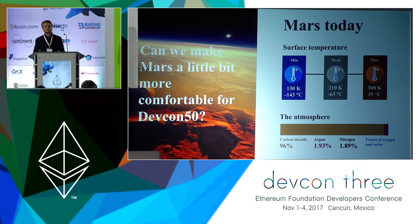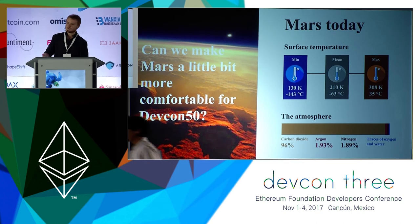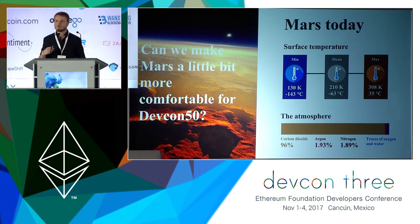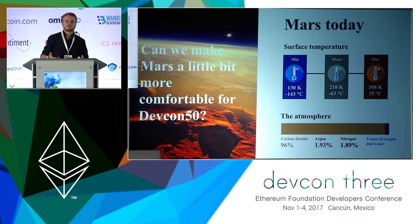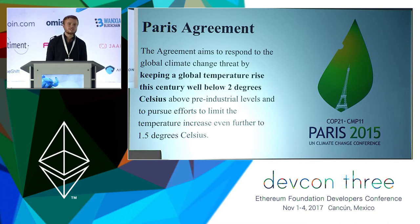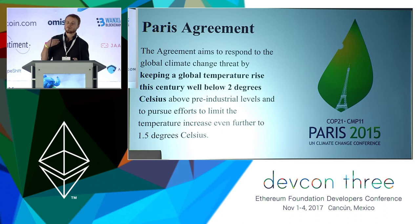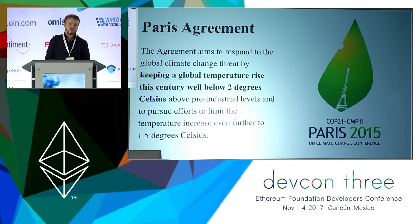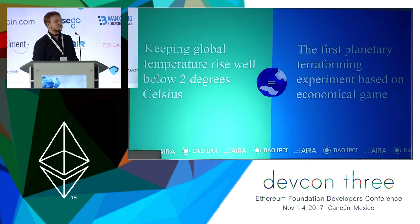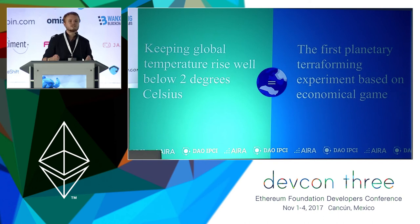As you know, Mars today is not a good place for humans — it's very cold and the atmosphere is not friendly for breathing. If we resolve logistics issues with SpaceX or other space programs, the next question will be: can we make Mars a little bit more comfortable for Defcon 50? Surprisingly, the Paris Climate Agreement can help us. Its main task is keeping global temperature rise below 2 degrees Celsius, which means Paris Climate Agreement is the first planetary terraforming experiment based on economic incentives.